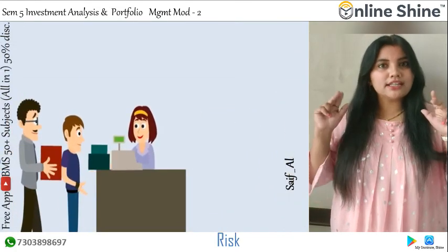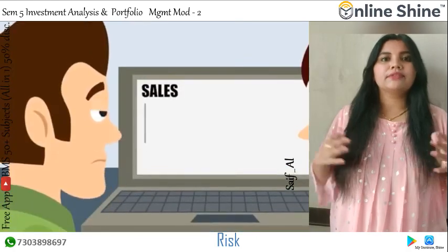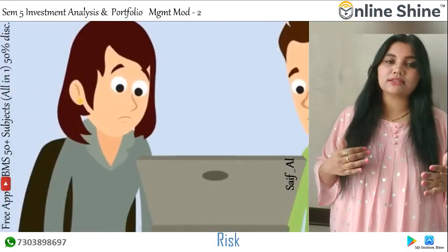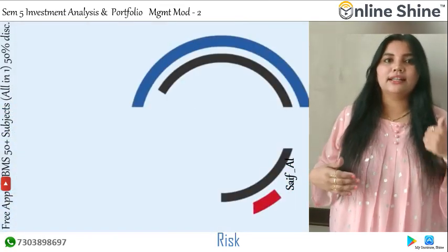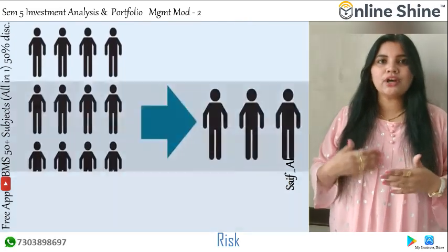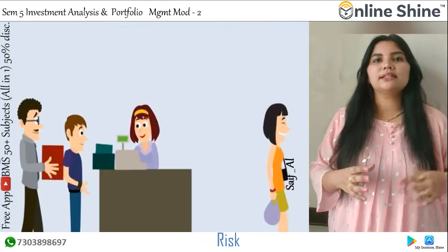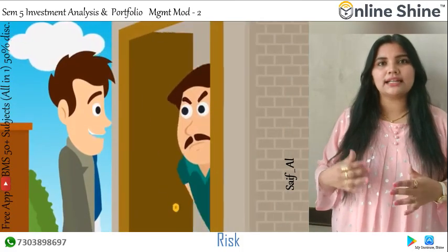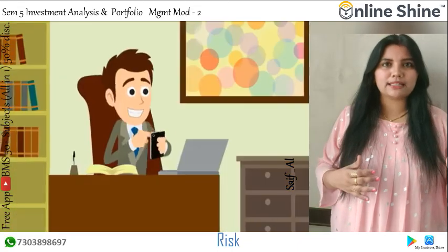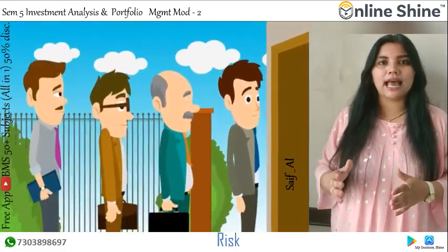It is important here to distinguish between expected return and realized return from an investment. The expected future return is what an investor expects to get from his investment and is uncertain. On the other hand, the realized return is what an investor actually obtains from his investment at the end of the investment period. The investor makes the investment decision based on the expected return. However, the actual return realized from the investment may not correspond to the expected return.